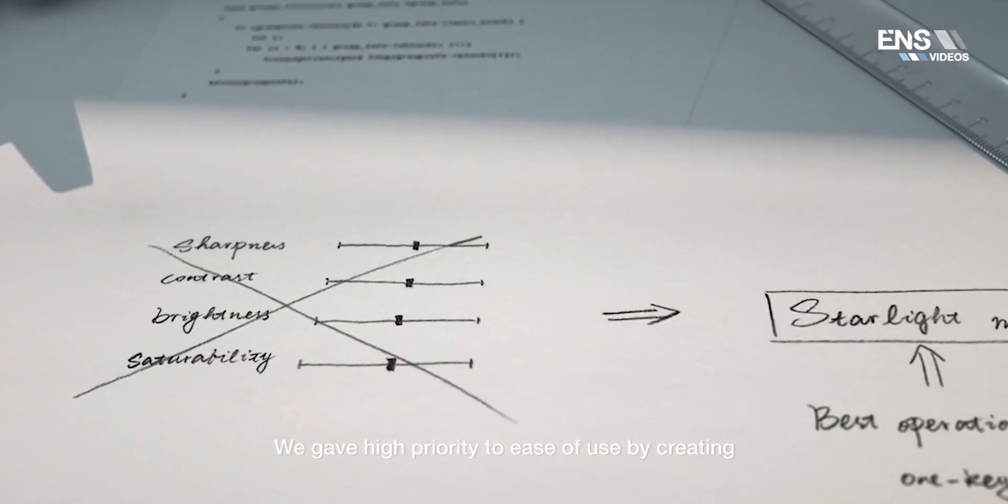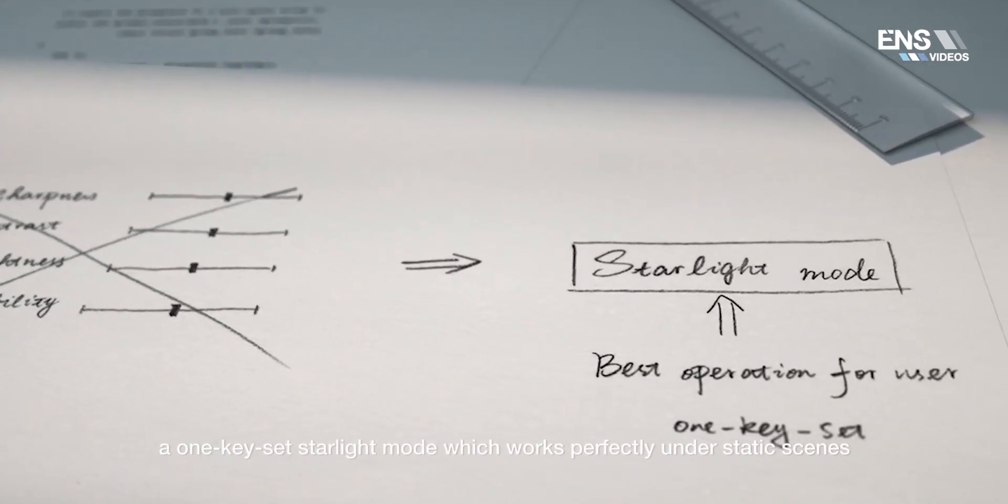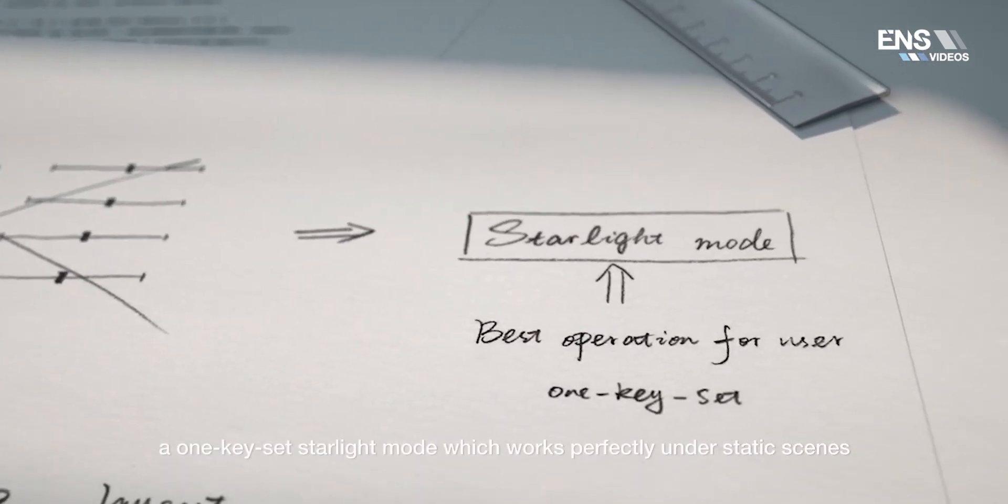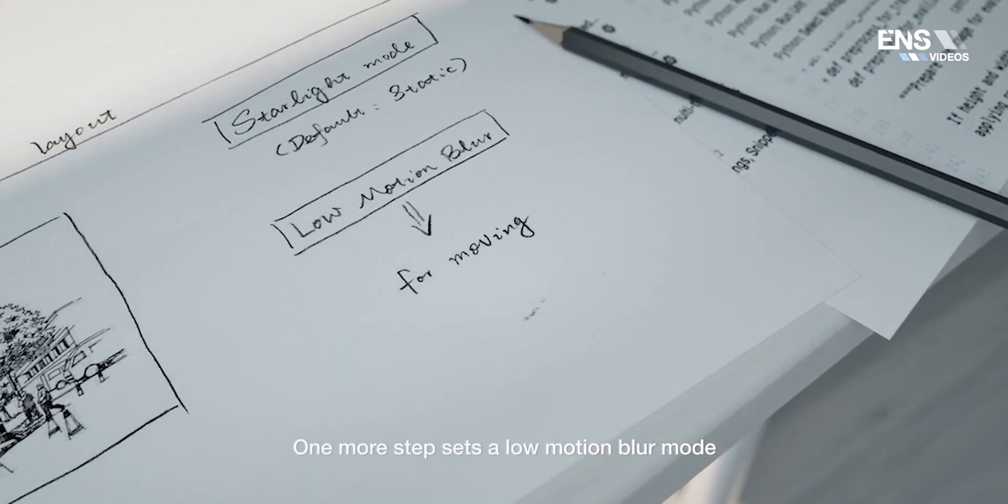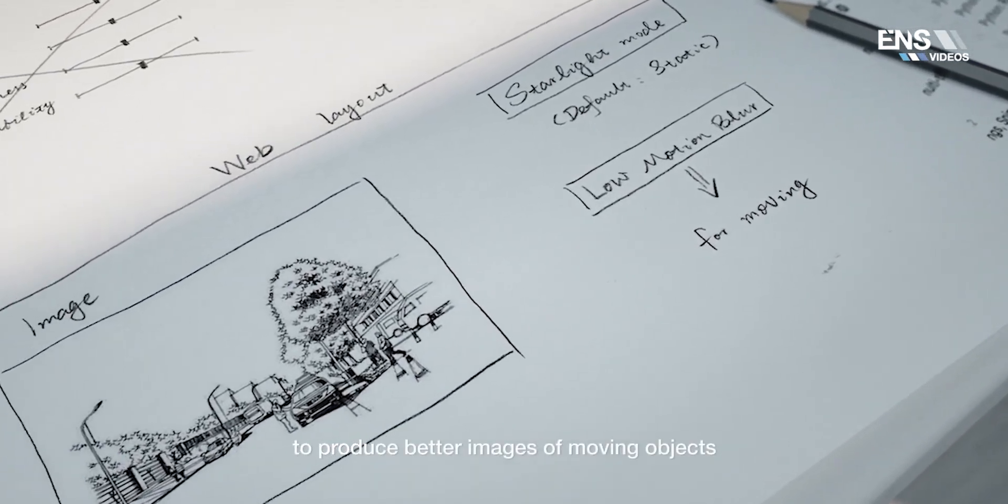We gave high priority to ease of use by creating a one-key set starlight mode, which works perfectly under static scenes. One more step sets a low motion blur mode, to produce better images of moving objects.